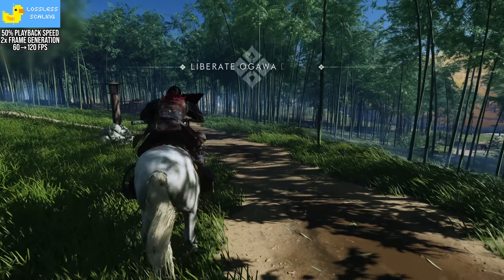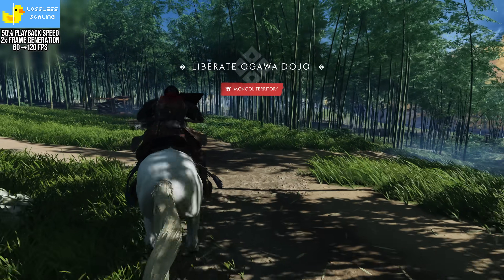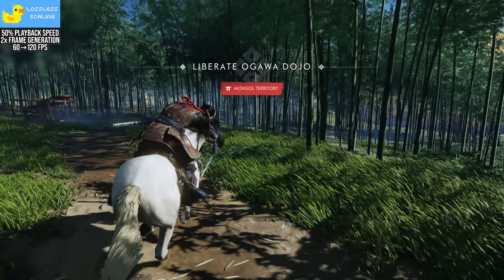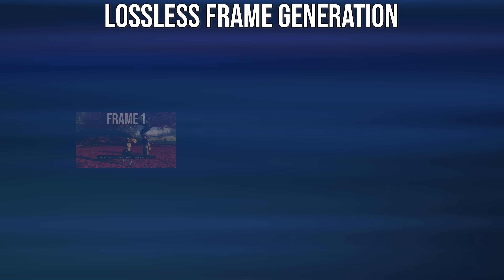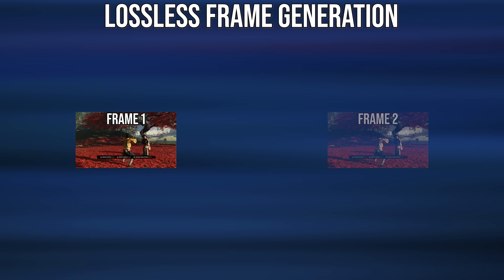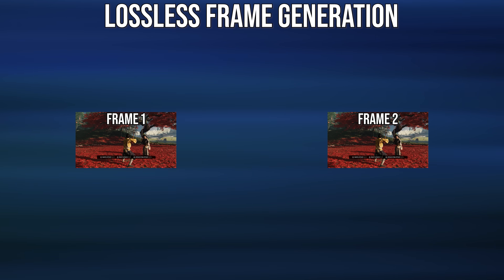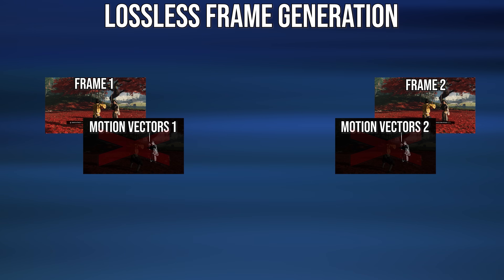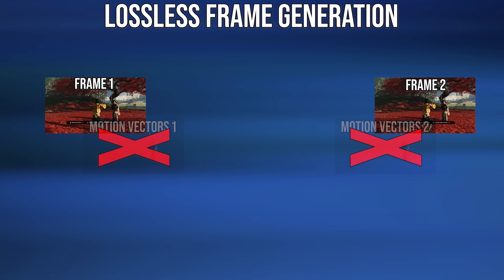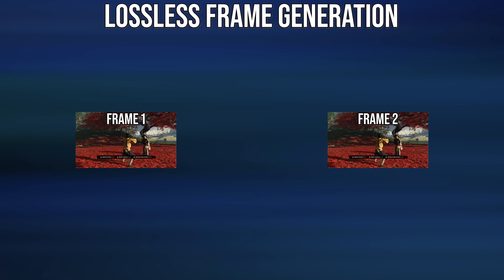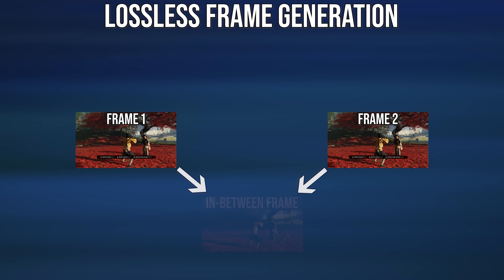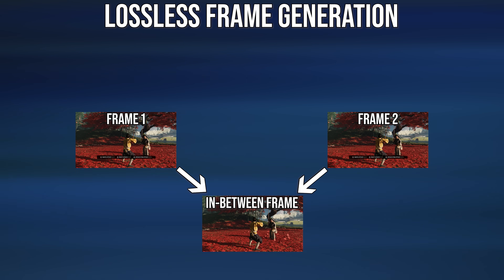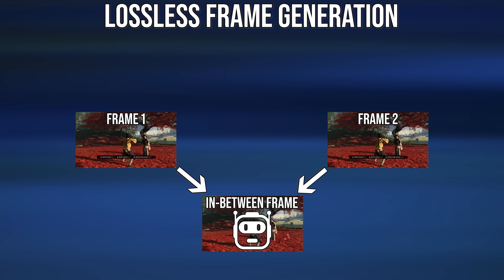Lossless Scaling is a mod and does not have access to the internals of a game — it is a post-process, after the game has done all the rendering. So it only has access to two full rendered color images with the HUD on them, and it has no access to motion vectors. Lossless Scaling has to guess what in an image is moving. According to the developers, the frame generation uses a form of machine learning to more accurately generate the in-between images.